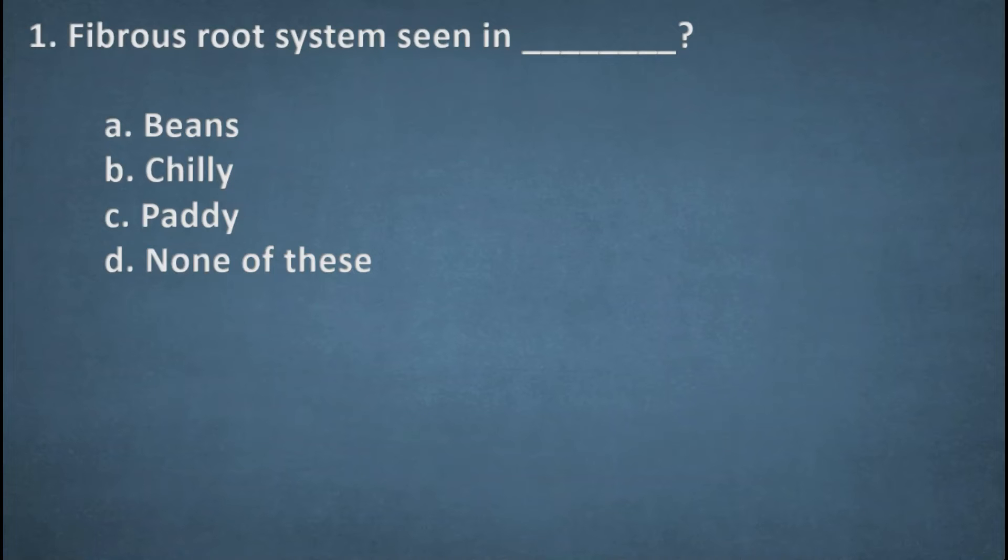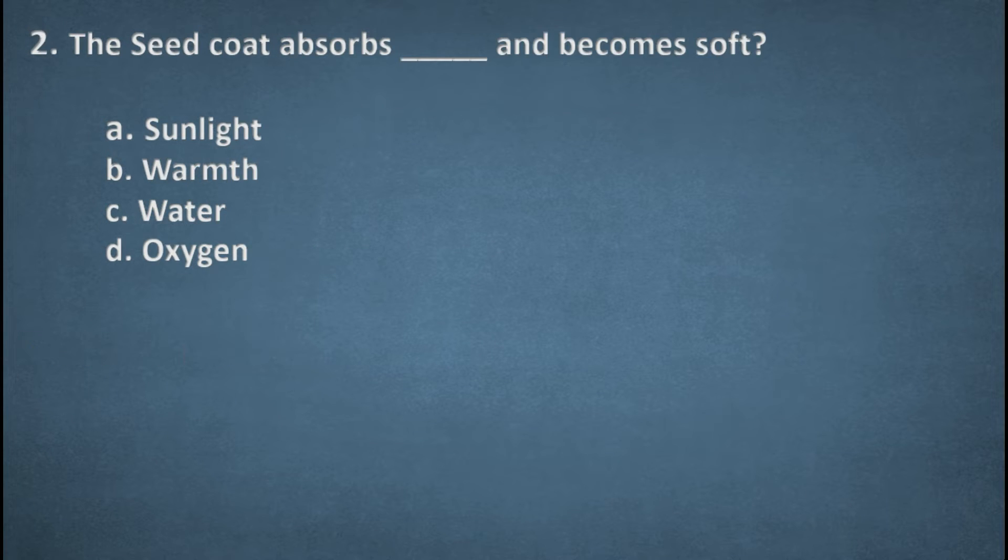First one, pervious root system seen in. Options: Beans, Chili, Paddy, None of these. The right option Paddy. Next one, the seed coats absorbs dash and becomes soft. Options: sunlight, Warm, Water, Oxygen. The right option water.